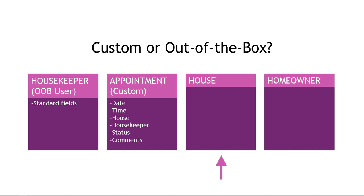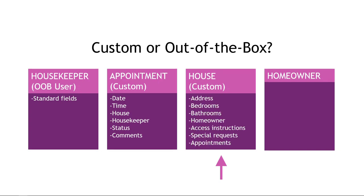Moving over to house — there's really nothing out of the box that's going to fit what we need for a house, so this will also be a custom entity. For fields, we're going to need the address of the house, how many bedrooms and bathrooms it has so the housekeepers know what they're up against, who the homeowner is, access instructions like where to get the key or the lockbox code, any special requests like leaving a bottle of wine for the next guests or noting it has a jacuzzi that needs cleaning. And we'd also like to see a list of all cleaning appointments for that house on the house's record.